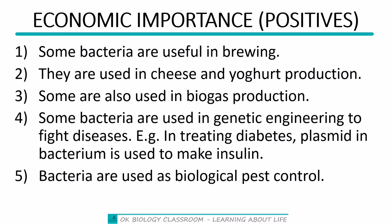Point five: bacteria are used as biological pest control. Some bacteria produce toxins that are harmful to insects that cause harm to certain crop plants. Since farmers want their crops well maintained and productivity increased, using these bacteria that produce toxins against harmful insects makes them very beneficial. So bacteria being used as biological pest control is an important positive.